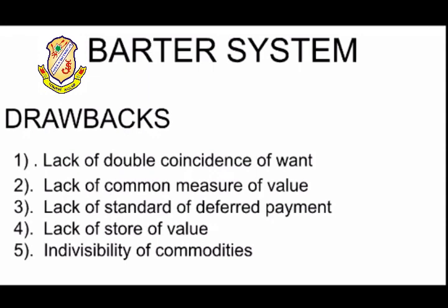The second drawback is lack of common measure of value. In barter system it is very hard to measure one good against another good or one service for another service. For example, how much cloth should you give for a bag of wheat? It is not possible to measure that. So that is another problem of barter system — lack of common measure of value. Today, with money, we know exactly how much a piece of cloth or a bag of wheat costs.